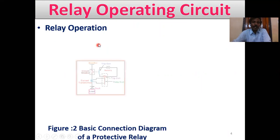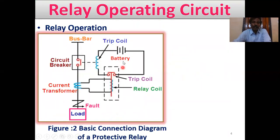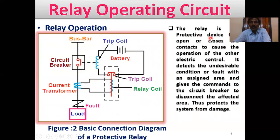Relay Operating Circuit: This is the relay operating circuit diagram — the basic connection diagram of the On-Off Relay, showing the infinite bus bar, circuit breakers, current transformer (CT), fault location, load, trip coil, relay coil, plunger, and battery. The relay is a protective device that opens or closes contacts to cause the operation of other circuits. It detects undesirable conditions or faults within an assigned area and gives commands to the circuit breaker to disconnect the affected area, thus protecting the system from damage.